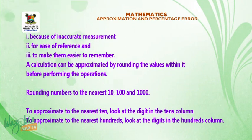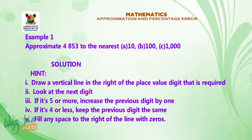Rounding numbers to the nearest ten, hundred and one thousand. To approximate to the nearest ten, look at the digits in the tens column. To approximate to the nearest hundreds, look at the digits in the hundreds column. And for the nearest thousands, look at the digits in the thousands column.